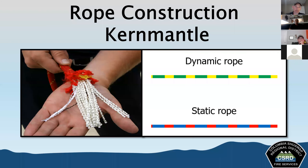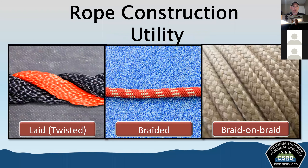Static rope is a low-stretch type, designed for low stretch without breaking, with a limited range of elasticity. NFPA 1983 requires that it must not elongate more than 10 percent under a load equal to 10 percent of its breaking strength. Static rope is used for rescue, rappelling, and hoisting when falls are not likely and only short falls are possible.